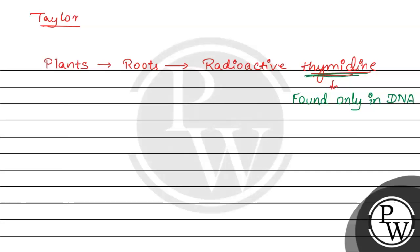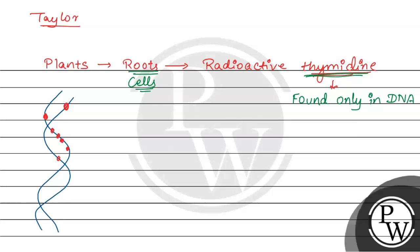तो radioactive thymidine medium में जो root cells grow हुए, उनके DNA में radioactive thymidine add हो गया. यहाँ पे हमारा DNA strand है और यहाँ पे radioactive thymidine nucleotides add हो गए हैं — suppose यह है हमारा radioactive T nucleotides — तो इसको हम easily identify कर सकते हैं.